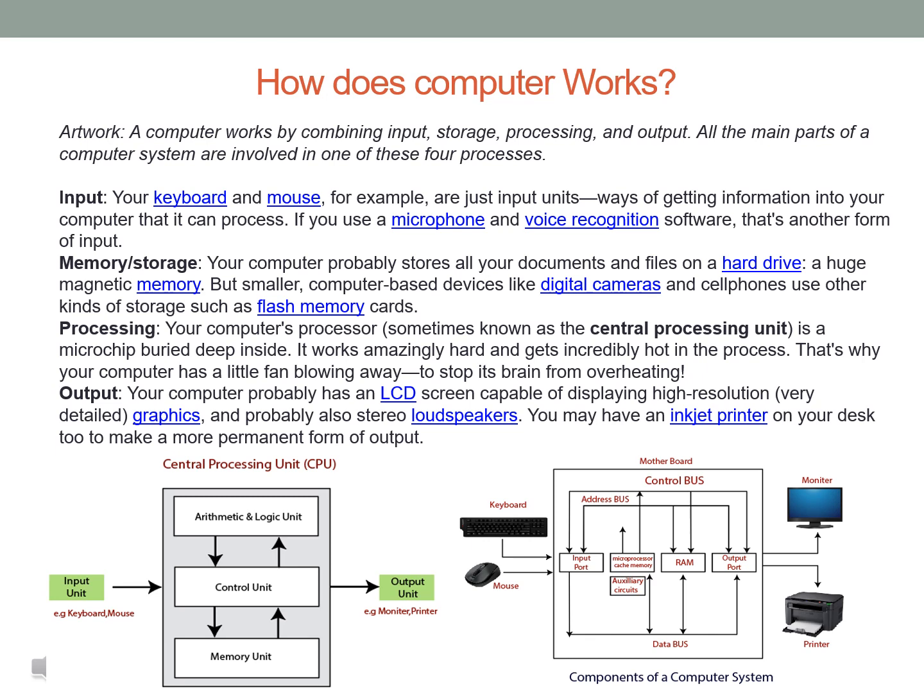A computer works by combining input, storage, processing, and output. All the main parts of a computer system are involved in one of these four processes. Input — your keyboard and mouse, for example, are just input units: ways of getting information into your computer that it can process. If you use a microphone and voice recognition software, that's another form of input.